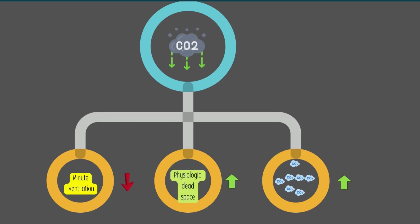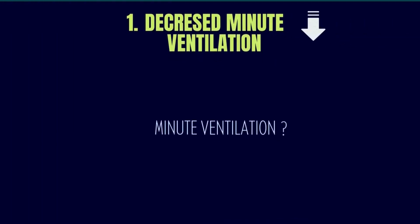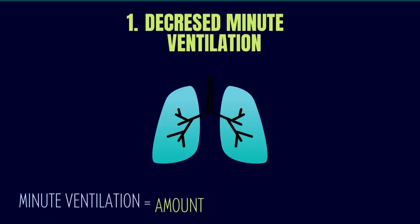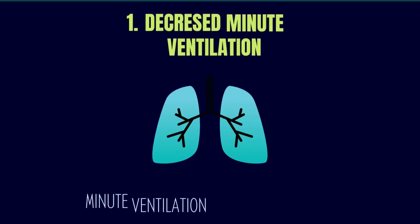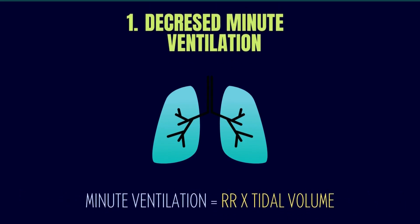Number 1. Decreased minute ventilation. First, what is minute ventilation? Minute ventilation, also known as total ventilation, is a measurement of the amount of air that enters the lungs per minute. It is the product of respiratory rate and tidal volume. The minute ventilation is the respiratory rate into tidal volume.